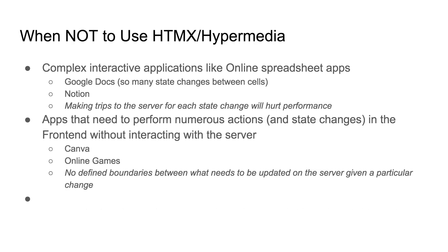When should you NOT use HTMX or hypermedia? When you have complex interactive applications — for example, online spreadsheets like Google Sheets where a lot of state management is going on between different cells. You don't want to make a server call to the API every time you update a cell, especially when updating one cell also triggers updates in three other cells.